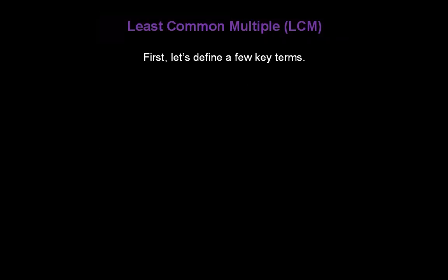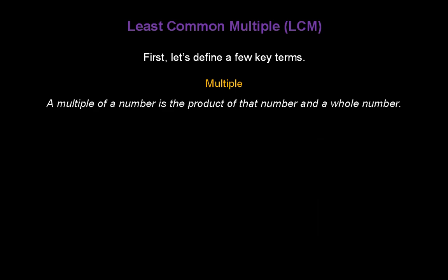First of all, let's define a few key terms. The word 'multiple.' A multiple of a number is the product of that number and a whole number. For example, let's say we want to find multiples of five. We could start with five times one, which is five; five times two, which is ten; five times three, which is fifteen; and so forth. All of these numbers are multiples of five.